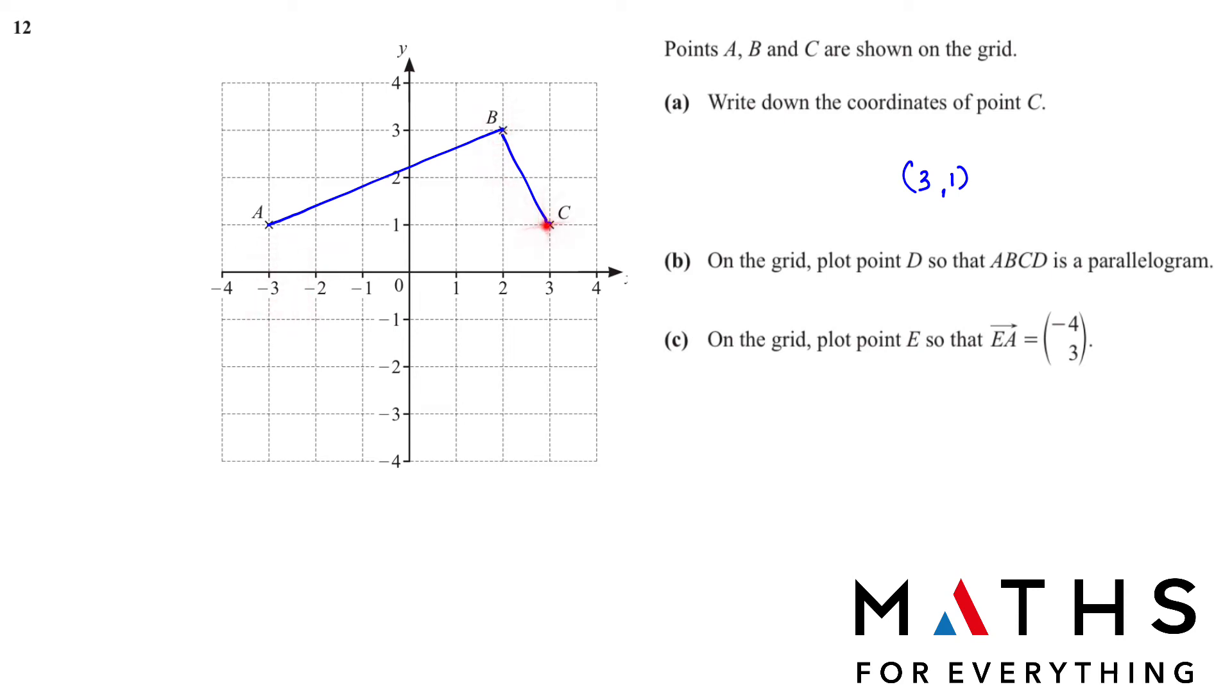From B, if we want to go to C, how do we go? We go two down and one right. Same way from A, we will go two down and one right. So this is our D. If you draw the shape, let's just draw it so you can see it clearly. If you join all the points, it's a parallelogram.